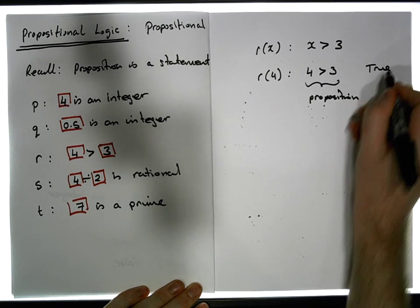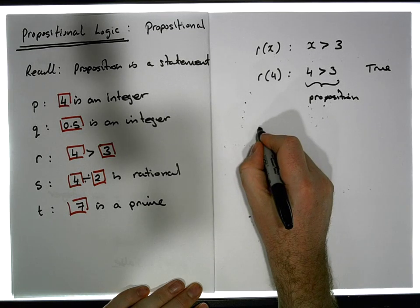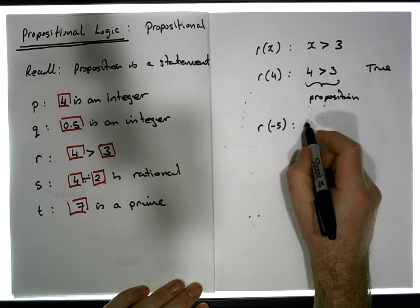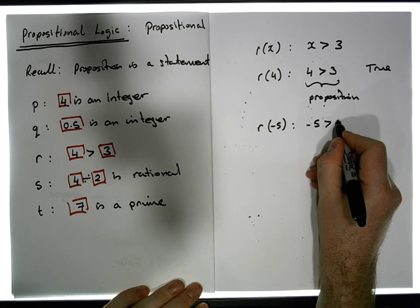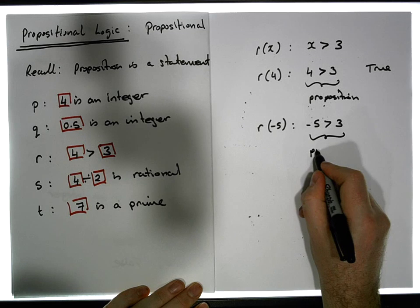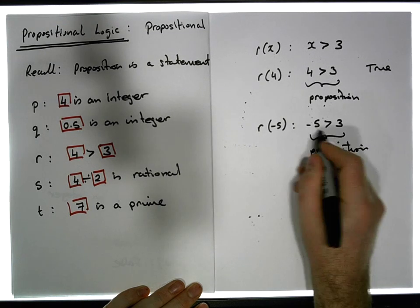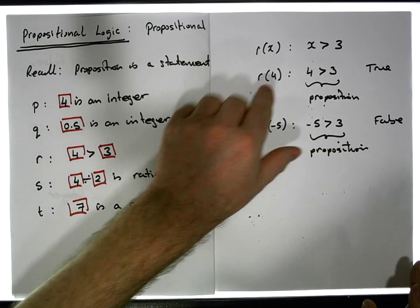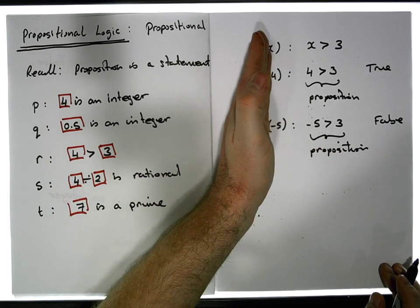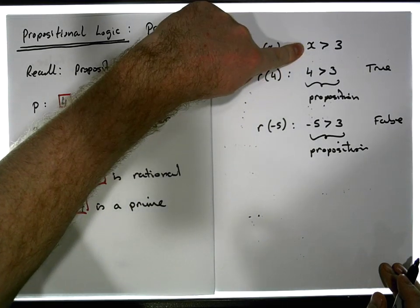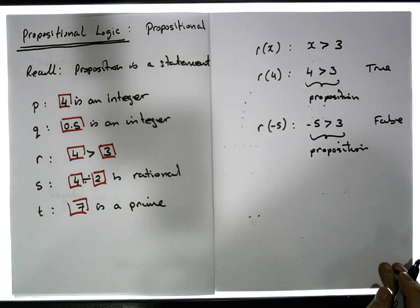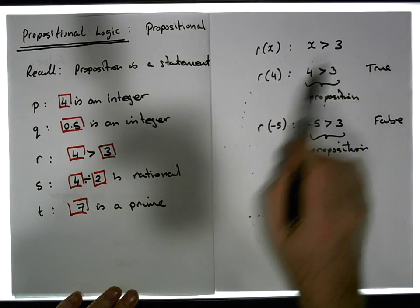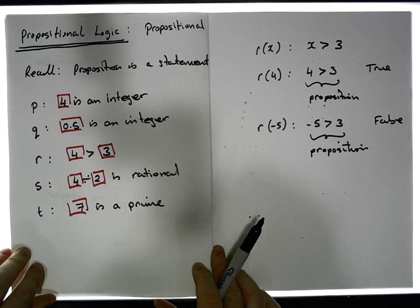r(4) is in fact true. We could also pass in r(-5), and the predicate then becomes '-5 is bigger than 3', which is clearly a proposition and is in fact false. The most important thing is that the predicate function takes inputs and from those inputs evaluates a proposition, assigning either a true or false value.